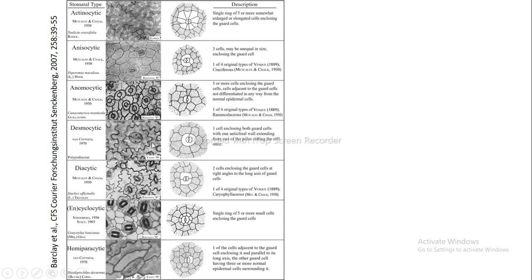Another type is desmocytic, where a single subsidiary cell surrounds both guard cells. This single cell has a cell wall extending at one of the poles, cutting the cell just once — an anti-clinal wall extending from one pole and cutting the cell once. This kind of arrangement is known as desmocytic.